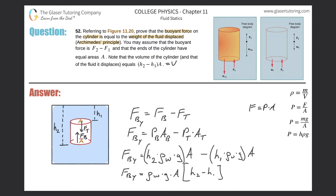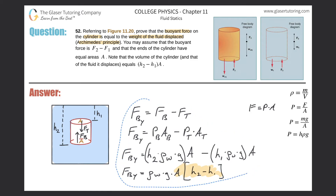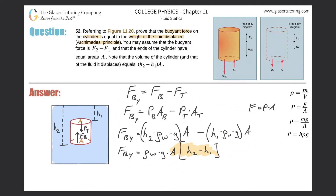That's the important idea: the volume of the cylinder is equal to the volume of the water that's displaced. So A times (H2 minus H1) is the volume of the cylinder, and also the volume of the water displaced. Therefore, the buoyant force equals the density of the water times gravity times the volume of the water displaced.